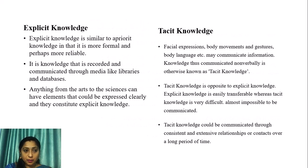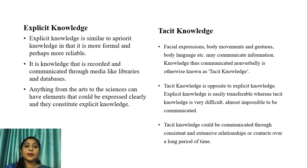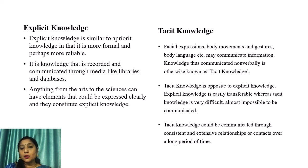Let us now look into explicit knowledge and tacit knowledge. Explicit knowledge is similar to a priori knowledge in that it is more formal and perhaps more reliable. It is knowledge that is recorded and communicated through media like libraries and databases. Anything from the arts to the sciences can have elements clearly expressed, and these constitute explicit knowledge. Tacit knowledge, by contrast, concerns facial expressions, body movements, gestures, and body language that communicate information non-verbally. Tacit knowledge is the opposite of explicit knowledge: explicit knowledge is easily transferable, whereas tacit knowledge is very difficult — almost impossible — to communicate.